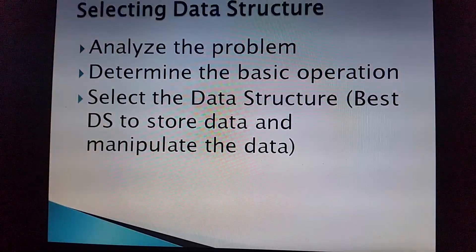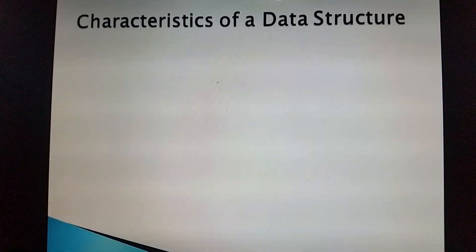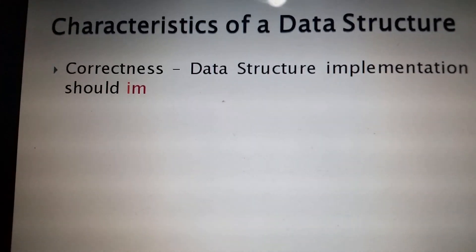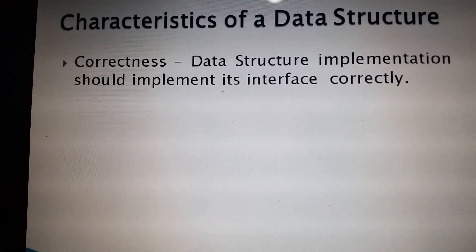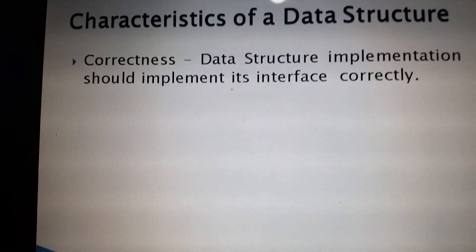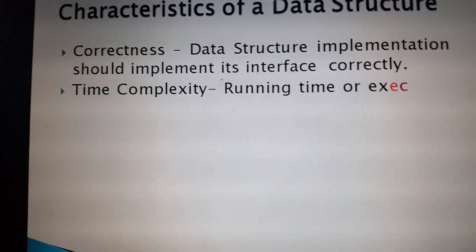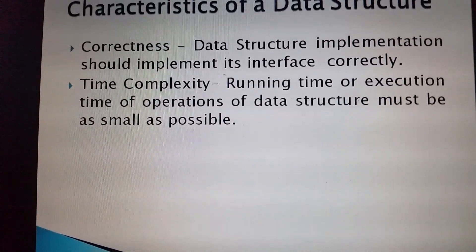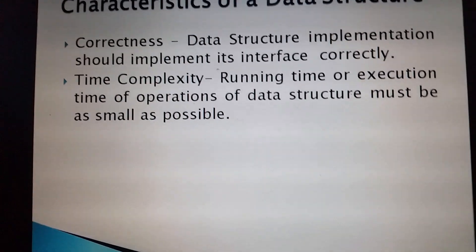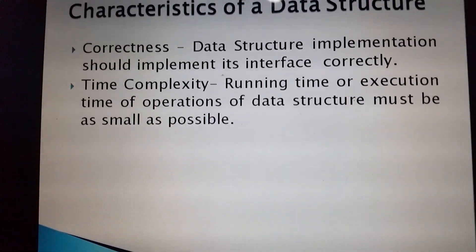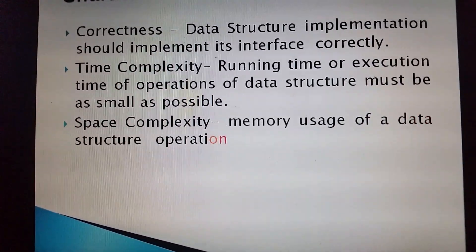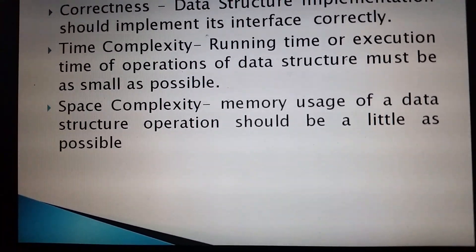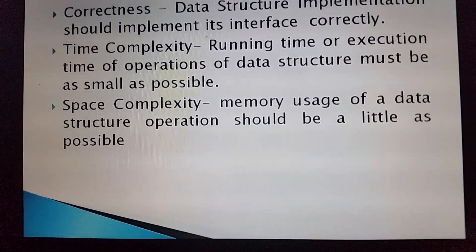We have some characteristics of data structure. The first one is correctness: data structure implementation should implement its interface correctly. Number two is time complexity: running time or execution time of operations of data structure must be as small as possible. The next one is space complexity: memory usage of a data structure operation should be as little as possible.